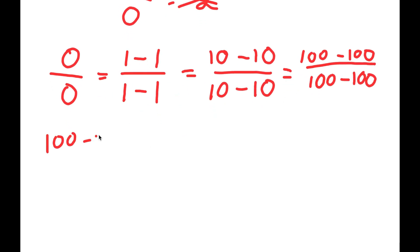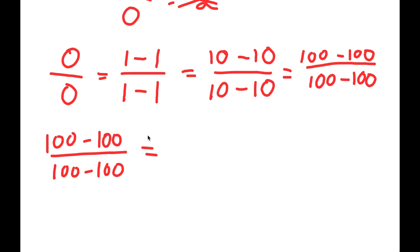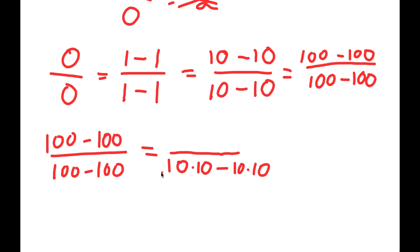So let me rewrite this. I have 100 minus 100 over 100 minus 100. Now, 100 is the same thing as 10 times 10. So for my denominator, I'm going to write this as 10 times 10 minus 10 times 10. And for my numerator, 10 times 10 is the same thing as 10 squared, so I'm going to write 10 squared minus 10 squared.